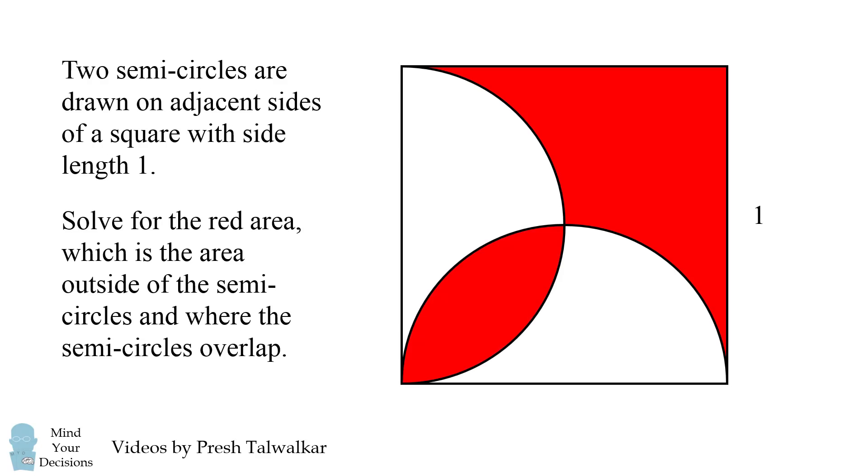Solve for the red area, which is the area outside of the semicircles and where the semicircles overlap. Can you figure it out?